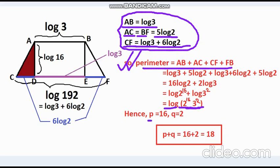So, here, p equals 16, and q equals 2. Therefore, p + q is 16 + 2, that is 18.